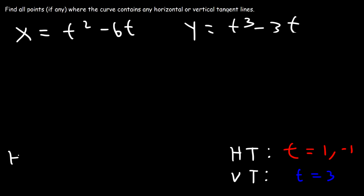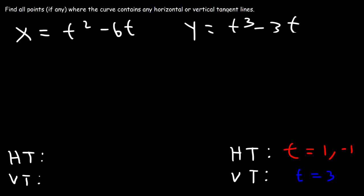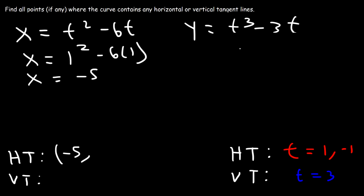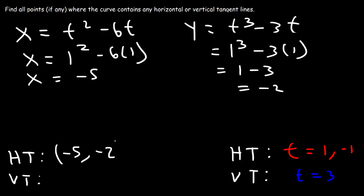Now we need to find the points where these tangent lines are located. Starting with t equals 1: x is 1 squared minus 6 times 1, which is 1 minus 6, that's negative 5. The y value when t is 1 is 1 cubed minus 3 times 1, which is 1 minus 3, that's negative 2. So we have a horizontal tangent line at the point (−5, −2).